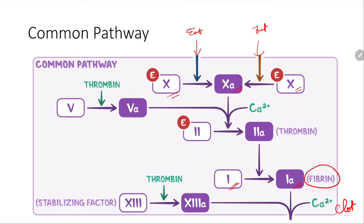You may wonder why thrombin appears in multiple steps. Thrombin is responsible for positive feedback of the coagulation cascade — once produced as active factor 2a, it keeps helping activate further factors such as factor 5 and factor 13, driving the pathway forward so that more fibrin is produced and a stronger clot is formed.